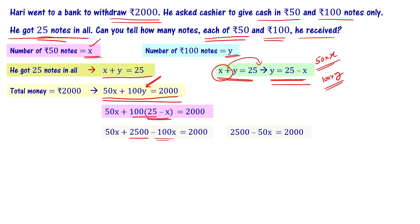2500 minus 2000 equal to 50x, so 50x equal to 500. x equal to 500 by 50, that is equal to 10.